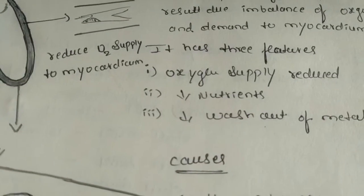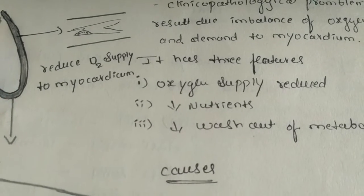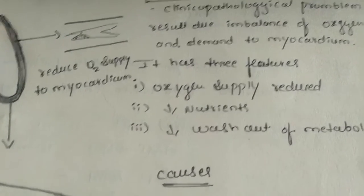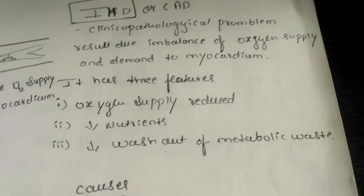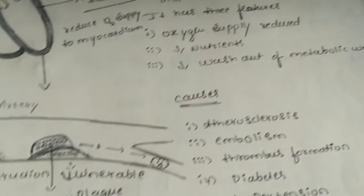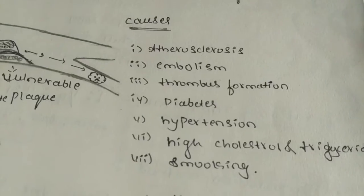It has mainly three features. As the oxygen supply is reduced, it reduces oxygen and nutrients to our body as well as the removal of metabolic waste from our body and the myocardial tissue is going to be decreased. Mainly we are going to have the causes.